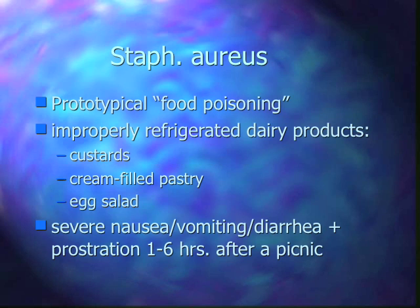Gastroenteritis for the most part is caused by a preformed toxin that's ingested in the food and drink — it's already there, not produced after ingestion. It's caused by the growth of bacteria and release of toxin into the food. The incubation period tends to be very short, up to six hours, but may occur within the hour. Duration is usually less than 12 hours, at most less than a day, and fever is very uncommon.